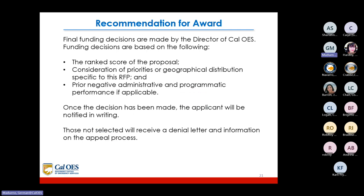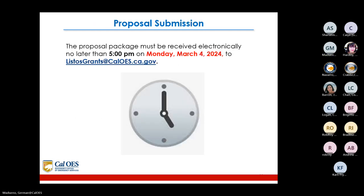Recommendations for award: final funding decisions are made by the Director of CalOES based on the rank score of the proposal, consideration of priorities or geographical distribution specific to the RFP, and prior negative administrative and programmatic performance if applicable. Once a decision has been made, the applicant will be notified in writing. Those not selected will receive a denial letter and information on the appeal process.